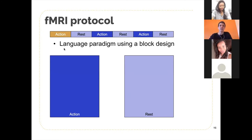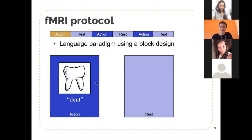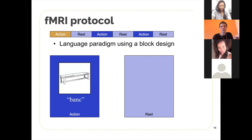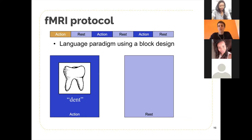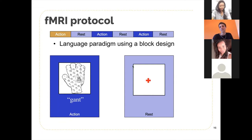In that particular study, the idea was to better understand how language is processed in the brain in these children. During the action phase, they were asked to name images — the names in French are very close in terms of sounds: dent, banc, gant — a tooth, a bench, a glove. Even though the meanings are very different, the sounds are really close, which can be difficult for these children. The goal was to study which parts of the brain are used for that task.